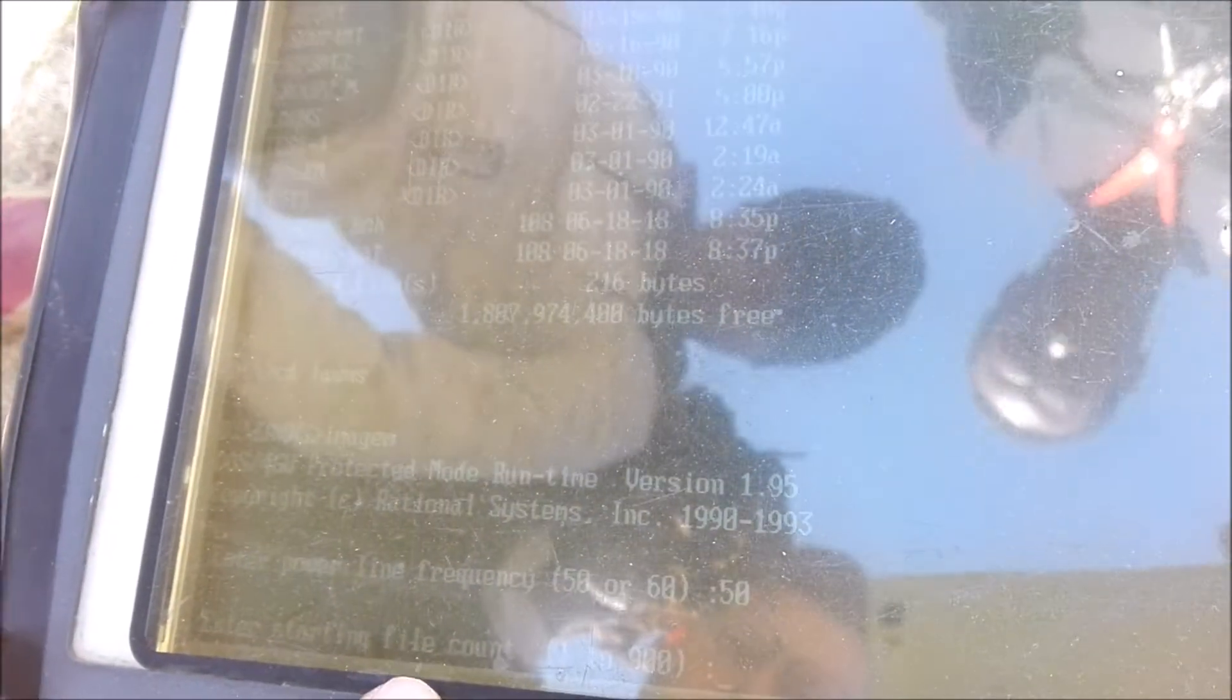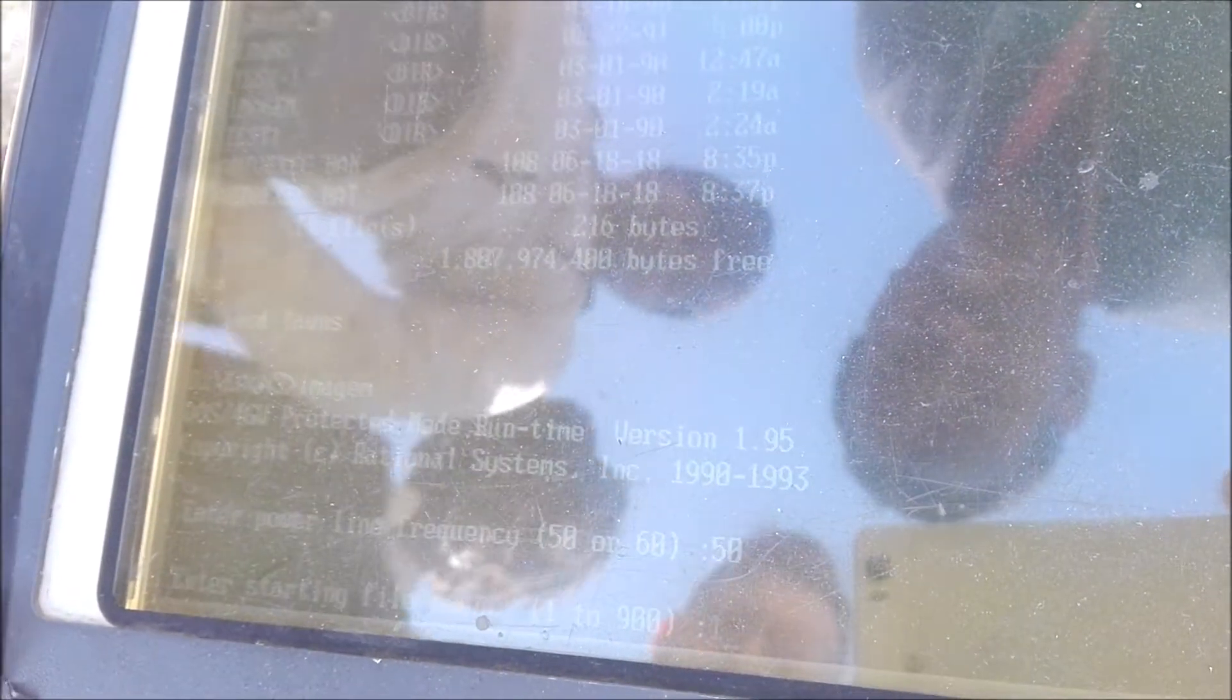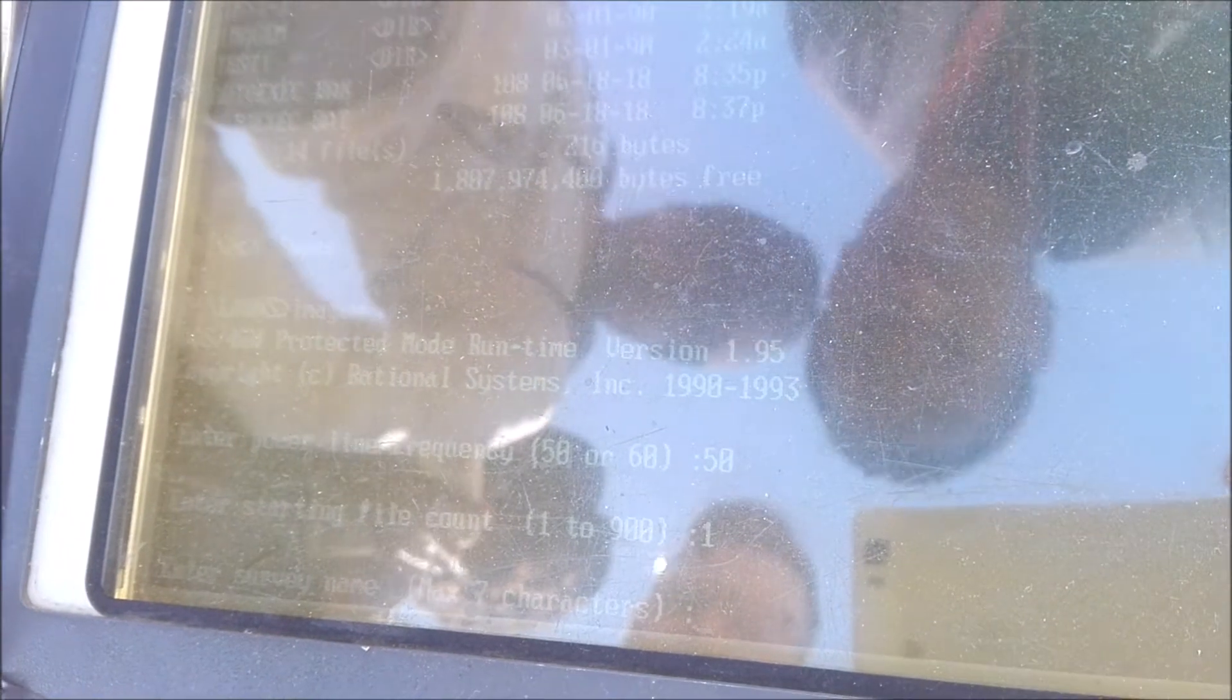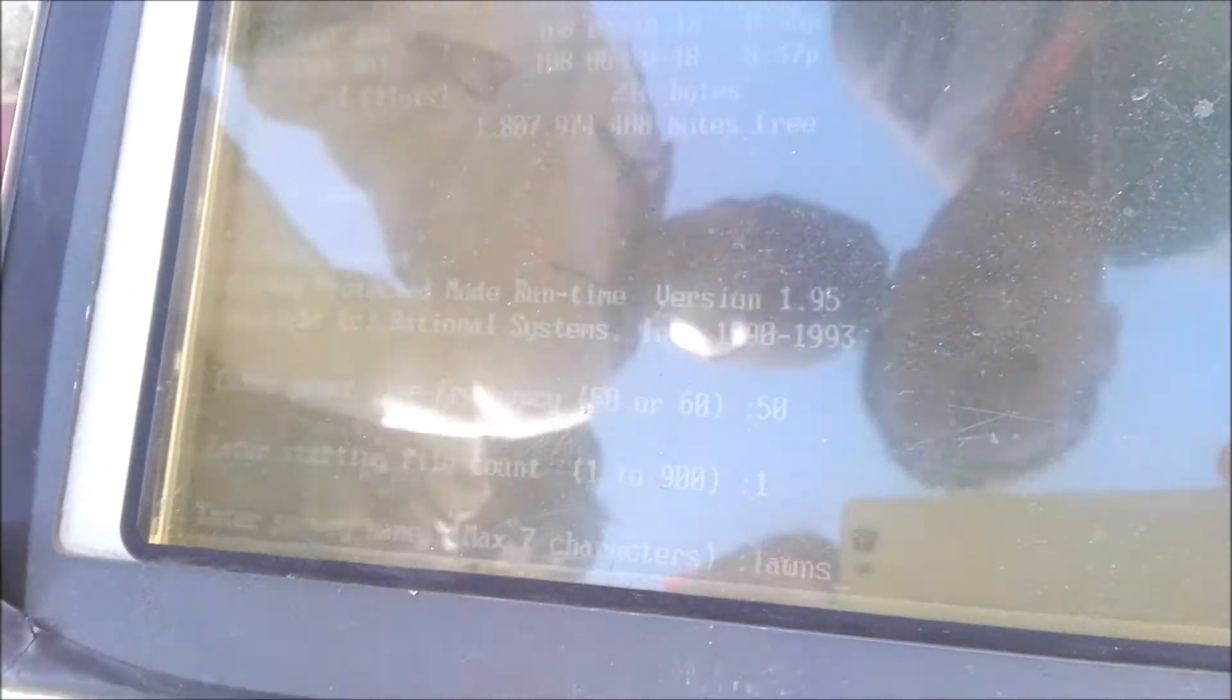Then enter starting file count. So it's going to start counting station one, station two. So we're just going to say station one, because we're starting a new day. Enter survey name. I'm just going to call it lawns again. And it has a max of seven characters.